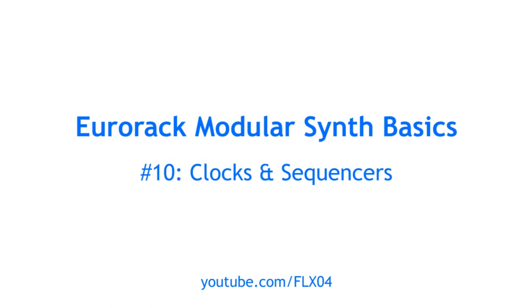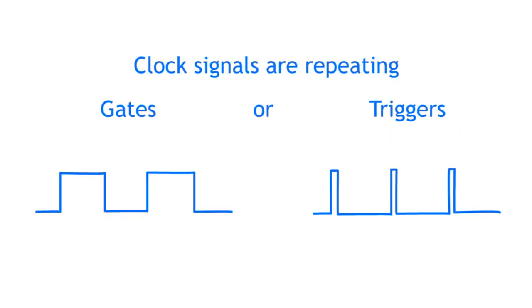If you want to play your modular in sync with other instruments, or if you want to make your modular synth do stuff over time on its own, you need clock signals. A clock signal is usually a gate or trigger that repeats at a set frequency, allowing your modular synth to tell time.